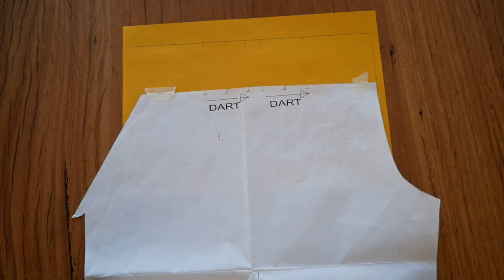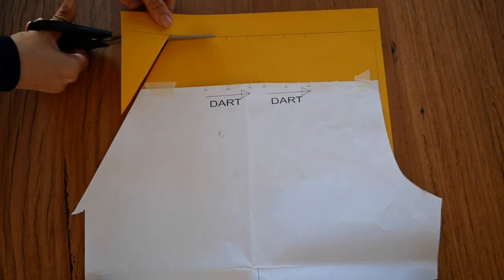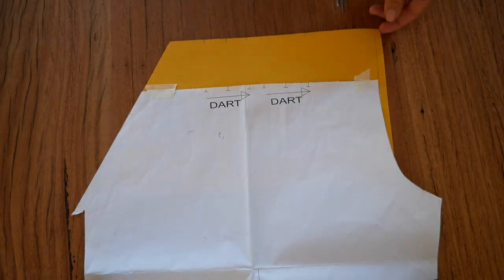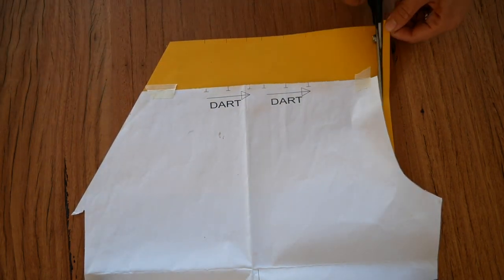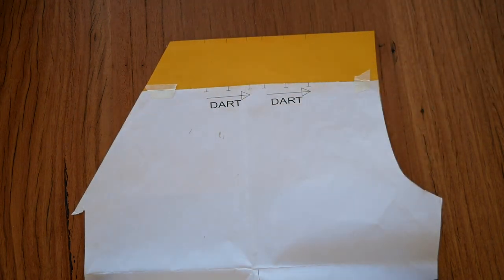That's the crotch length for the front pattern piece extended. To finish off, let's just cut the pattern out along the lines that we've marked. And there you have it, a new high-waisted pant sewing pattern. Pretty easy, right?